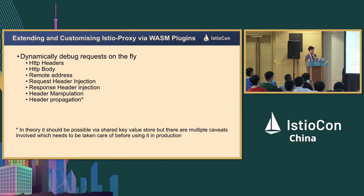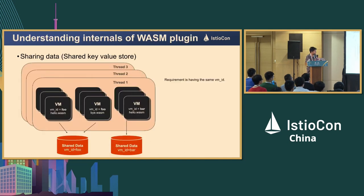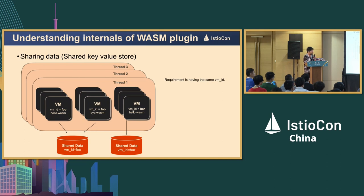For header propagation, the idea is to propagate headers from the inbound to the outbound request without instrumentation. If the application is instrumented, headers can be propagated easily. But if the application is not instrumented, you create two different VMs sharing the same VM ID, and using shared data, you save that particular header and then use that information based on the request ID to propagate the header. There are issues at scale, but for small scale it may work — so it's theoretically possible but needs careful handling in production.